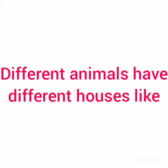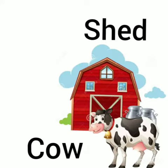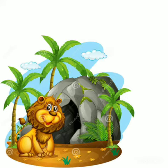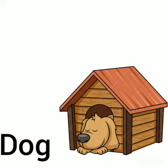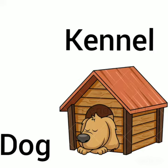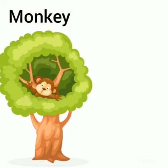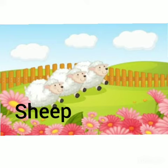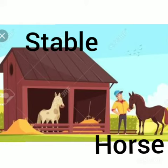Different animals have different houses. Cow — Shed. Lion — Den. Dog — Kennel. Monkey — Tree. Sheep — Pen. Horse — Stable.